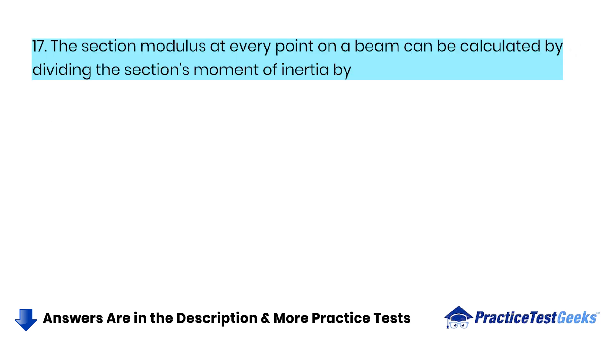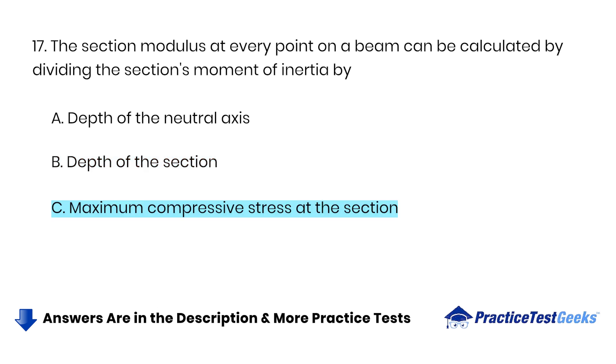The section modulus at every point on a beam can be calculated by dividing the section's moment of inertia by A. Depth of the neutral axis. B. Depth of the section. C. Maximum compressive stress at the section. D. Maximum tensile stress at the section.